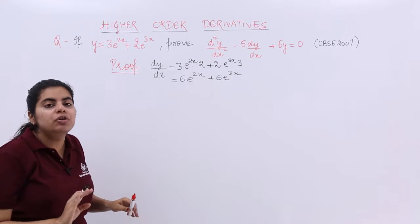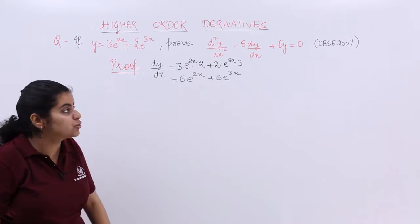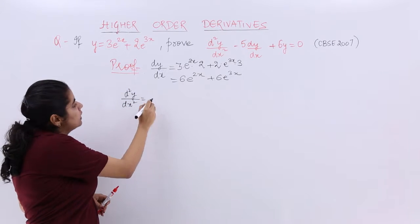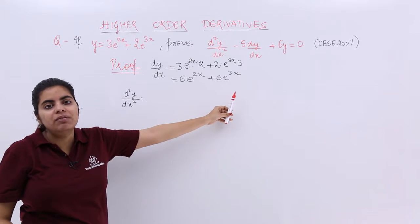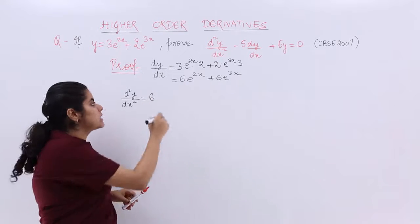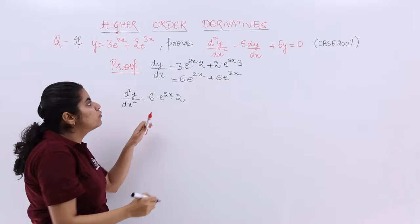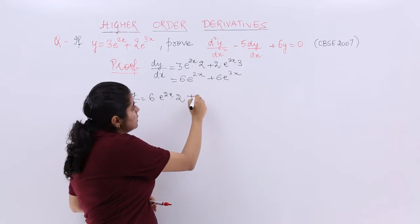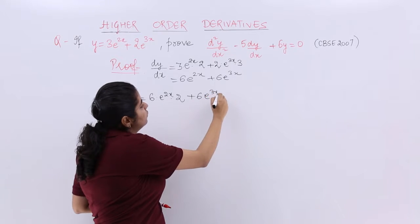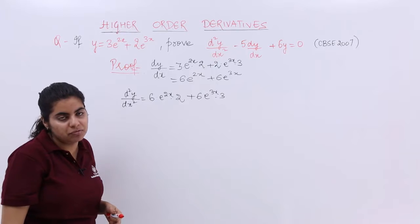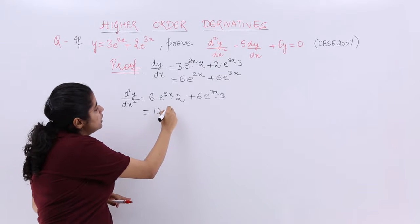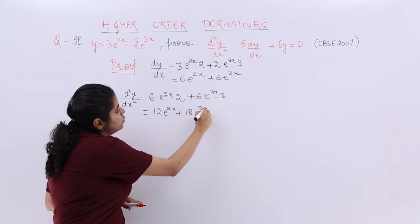Since dy/dx has been found out, we do not stop here. We also need to find d²y/dx² since it is needed later. d²y/dx² is the differentiation again of dy/dx with respect to x. So 6 constant as it is, e^(2x) differentiation gives e^(2x) times 2. Plus 6 as it is, e^(3x) differentiation gives e^(3x) multiplied by 3 for the same obvious reasons. Now 6 times 2 is 12 and 6 times 3 is 18. So d²y/dx² equals 12e^(2x) plus 18e^(3x).